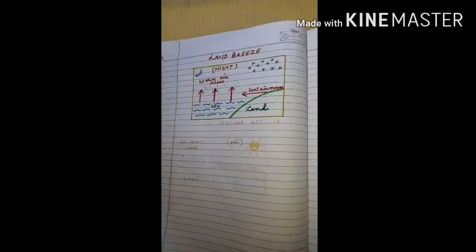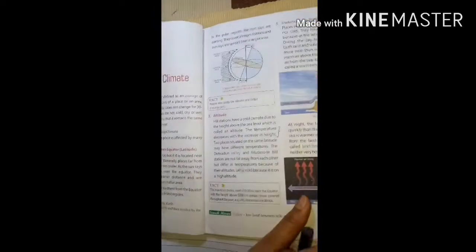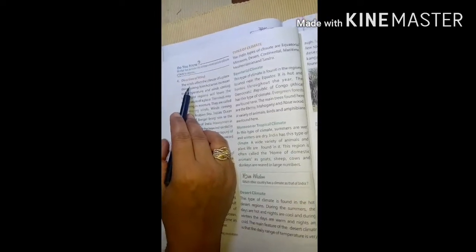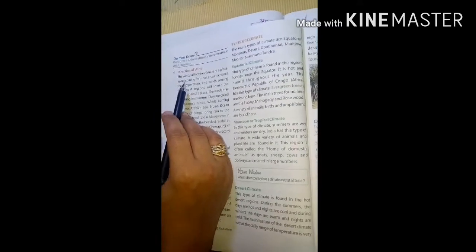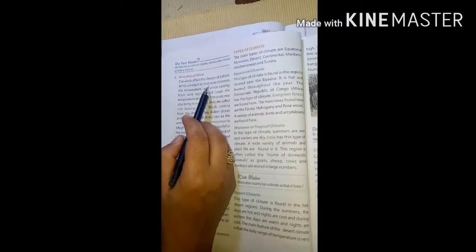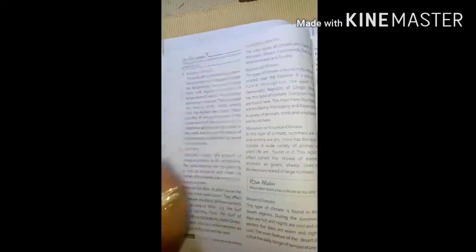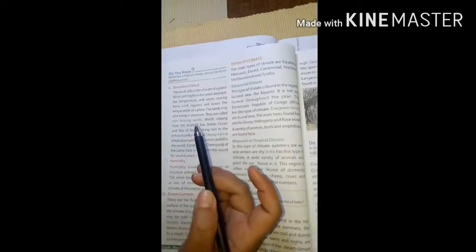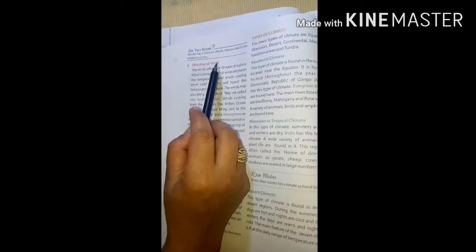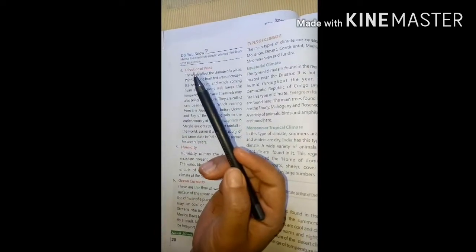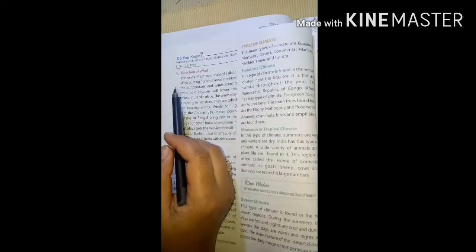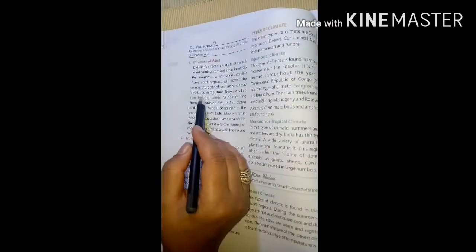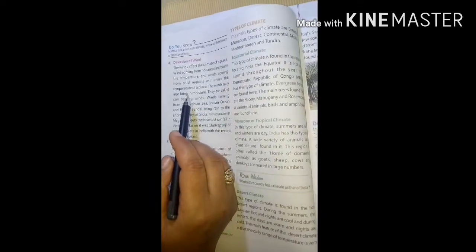Now we will be talking about direction of winds. Direction of winds is very important. It means from where and which direction they are actually coming. That affects the climate of a place. Winds coming from the hot areas increases the temperature and the winds which are coming from the cold regions will lower the temperature of a place. The winds may also bring moisture and these are known as rain bearing winds. In India, the winds coming from the Arabian Sea, Indian Ocean and Bay of Bengal bring rain to the entire country.